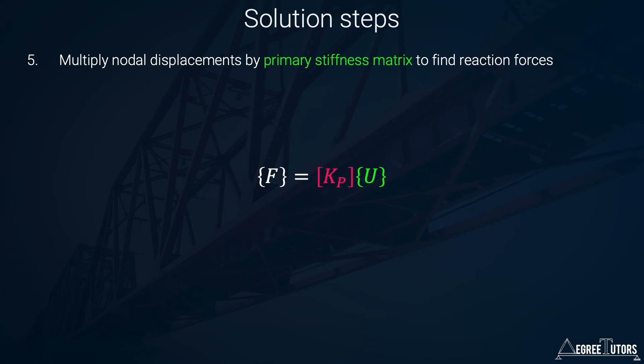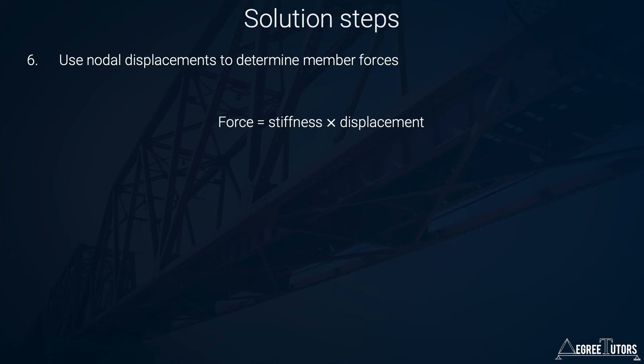Step five is to multiply the nodal displacements found in step four by the primary stiffness matrix to give the reaction forces. Step six is to use the nodal displacements to determine the member forces. There are three pieces of information we want: node displacements, reaction forces, and member forces. Once we have the nodal displacements, we can determine the force in each member.